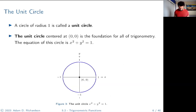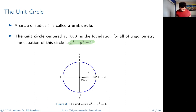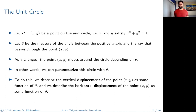A circle of radius one is called a unit circle. The unit circle centered at the origin — equation x² + y² = 1 — is the foundation for all of trigonometry. You want to focus on this image and burn it into your brain, because most of the answers to the questions we ask will boil down to thinking about the unit circle. We let P be a point on it.